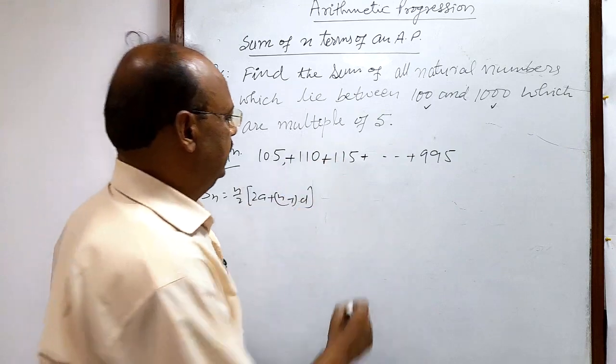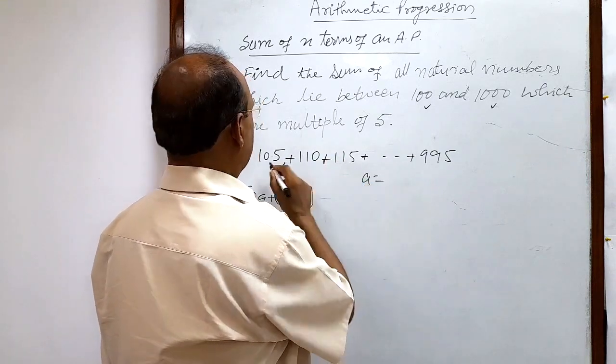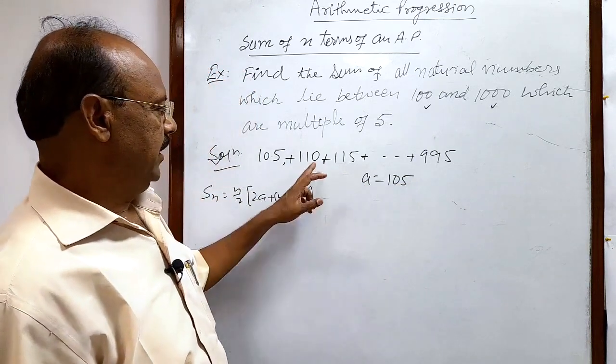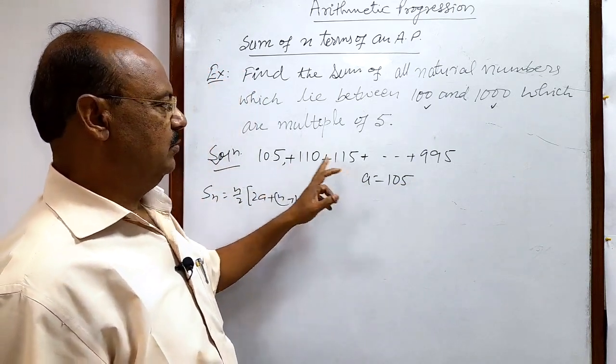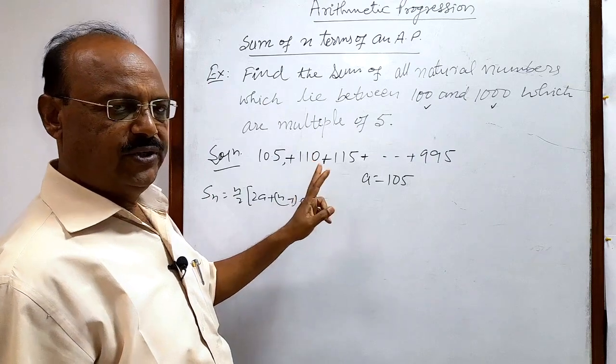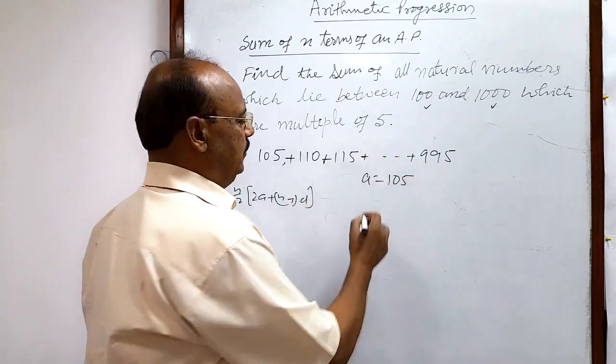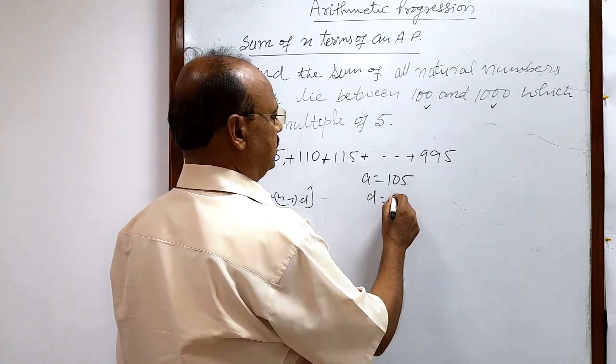So here obviously first term a is 105. And common difference, second term minus first term or third term minus second term, difference between two consecutive numbers. All numbers are multiples of 5, so naturally common difference d is 5.